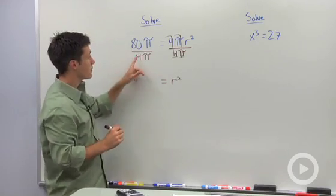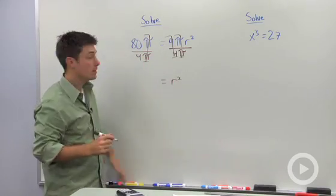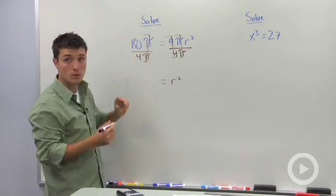On the left side here, we have π divided by π, which is 1. We have 80 divided by 4, which is 20.